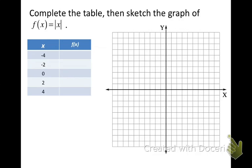You know that the absolute value of any number is going to be positive. When x is negative 4 and negative 2, you're going to get positive 4 and positive 2 respectively. The absolute value of 0 is 0, and the absolute value of positive 2 and positive 4 are positive 2 and positive 4. Having made that table, I'm going to plot those points and you'll start to see the shape of the absolute value graph form.